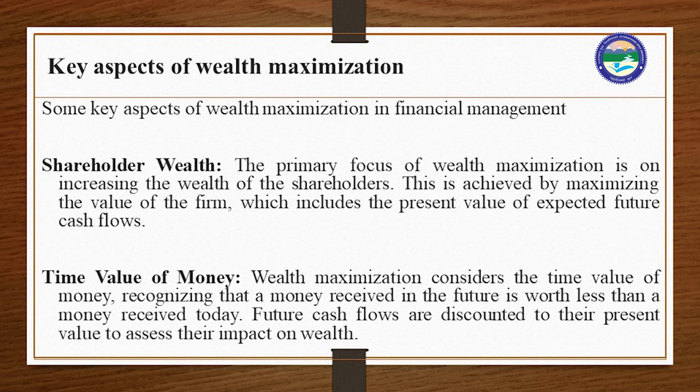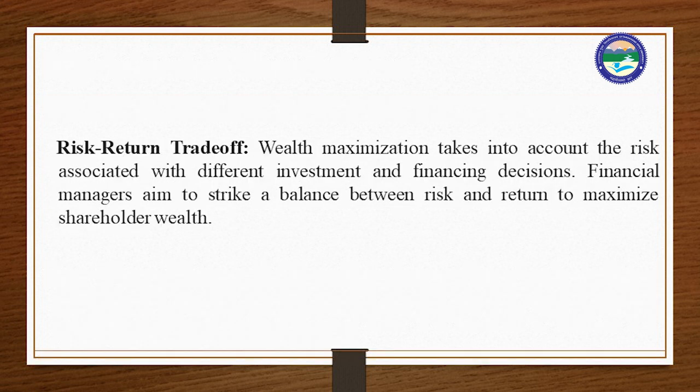Here are some key aspects of wealth maximization. First is shareholder wealth. The primary focus is on increasing the wealth of the shareholders, achieved by maximizing the value of the firm, which includes the present value of expected future cash flows. Second is time value of money. Wealth maximization considers the time value of money, recognizing that money received in the future is worth less than money received today. Future cash flows are discounted to their present value to assess their impact on wealth.